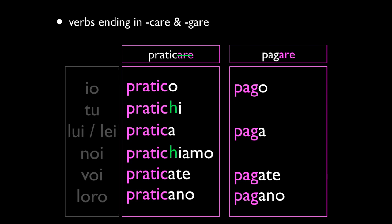The same concept applies to PAGARE. You chop off the ARE as usual, start conjugating: PAGO, then TU PAGI — that's a problem because the original verb is PAGARE. Then PAGA is fine, but NOI PAGIAMO is also problematic because the infinitive is PAGARE. Then VOI PAGATE and PAGANO. How do you solve this? Same rule: add an H, and all of a sudden you've made the G a hard sound again — TU PAGHI, NOI PAGHIAMO. If you have a CARE or GARE verb, remember to put an H in the TU and NOI forms.